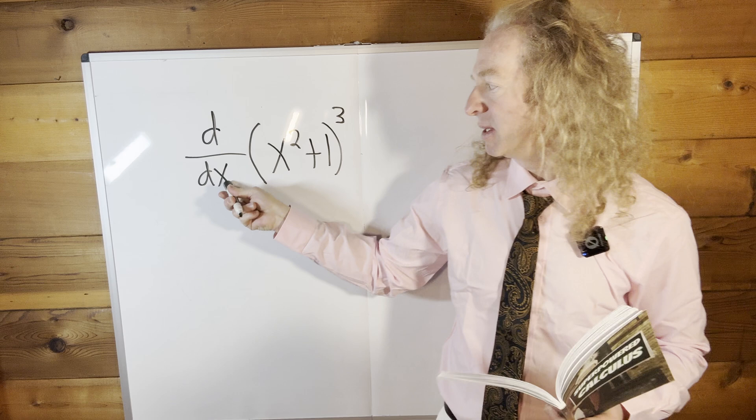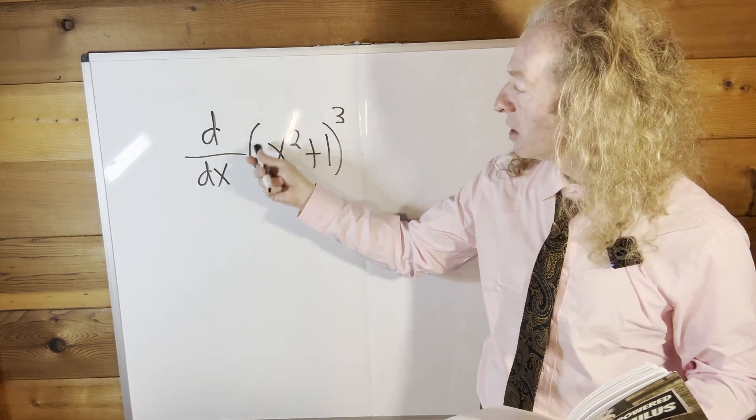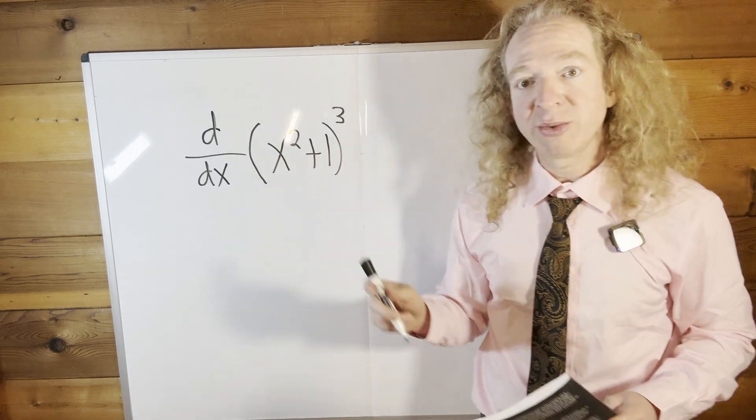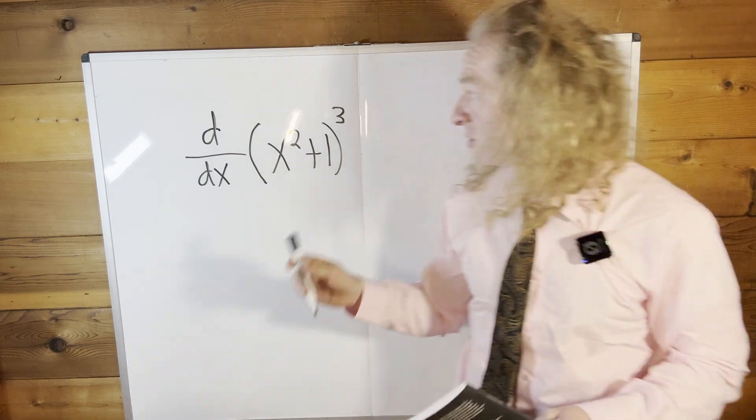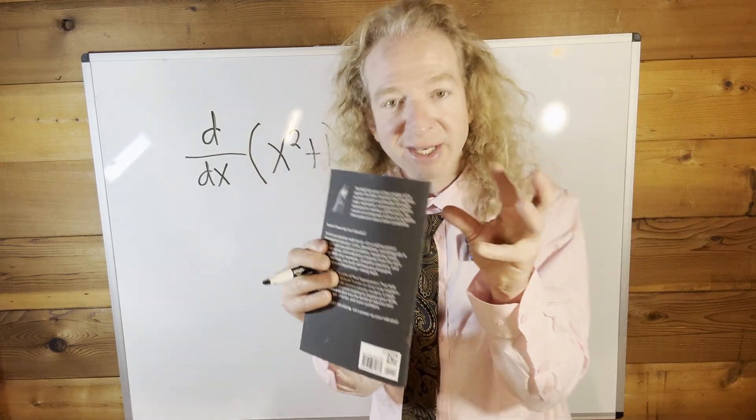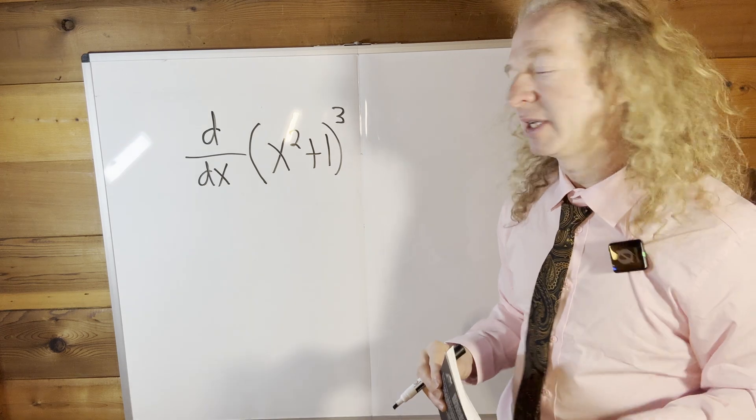So d/dx basically means you take the derivative of whatever is here. Because we have a function composition in this example, we're going to use the chain rule. The chain rule says that you take the derivative of the outside, you leave the inside piece untouched, and then you multiply by the derivative of the inside.